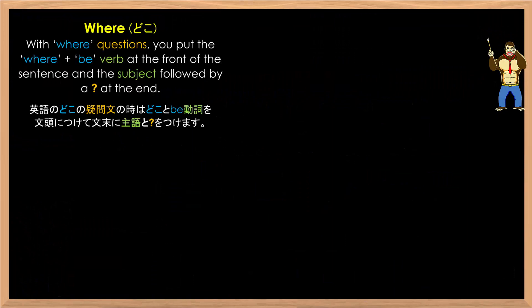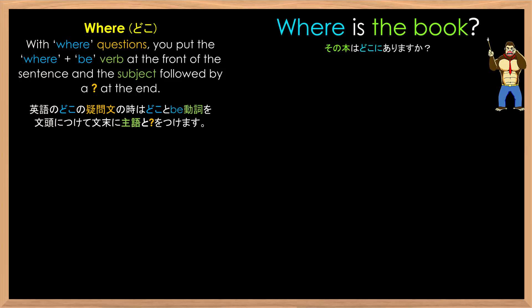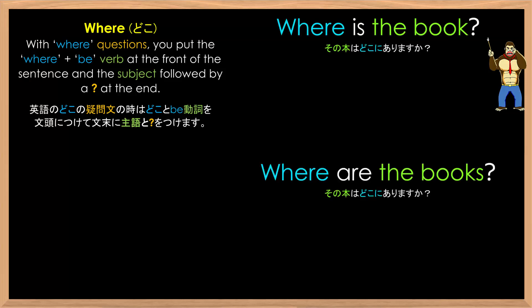Let's get started. With where questions, you put the where plus be verb at the front of the sentence and the subject followed by a question mark at the end, as in: Where is the book? Where are the books?